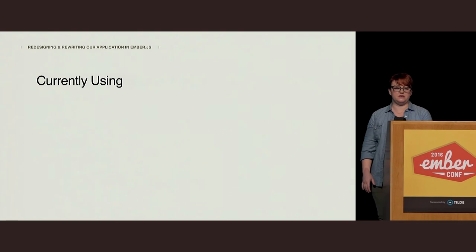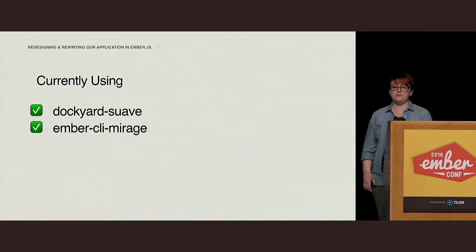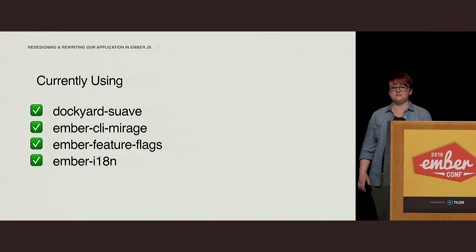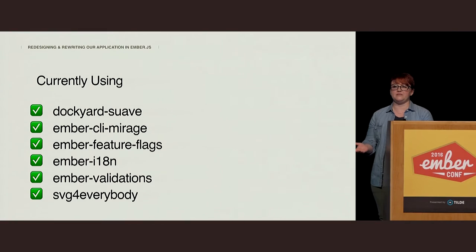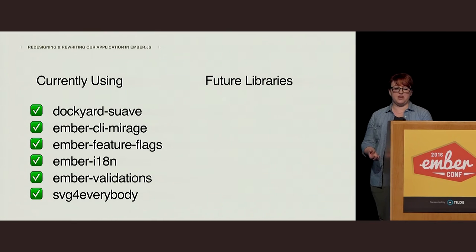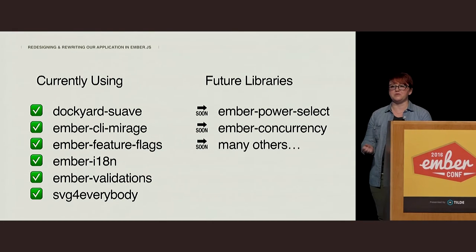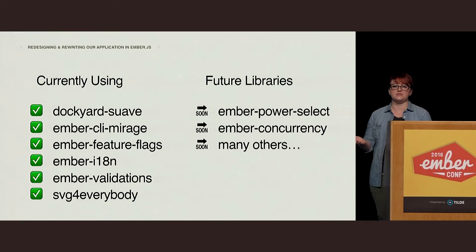We relied on a lot of community solutions. We're currently using Docuart Suave, Ember CLI Mirage, Ember Feature Flags, Ember IATN, and Ember Validations, and then finally SVG for Everybody. There are also some libraries we're not using yet but will be soon — a couple of future libraries: Ember Power Select, Ember Concurrency, and I'm sure there are many others we'd like to work into our app. At this point, I'd like to say a huge thank you to everyone in the community that helps support and maintain all of these projects that we're able to take advantage of.